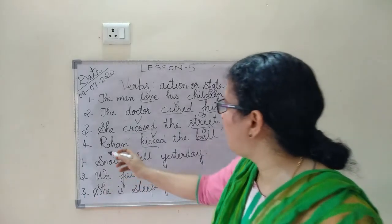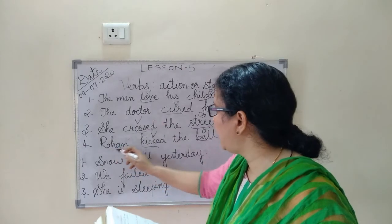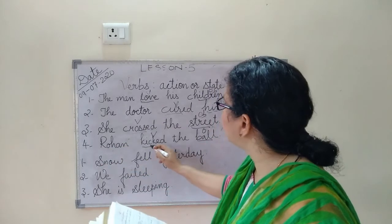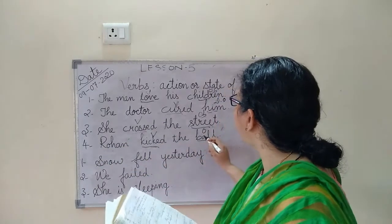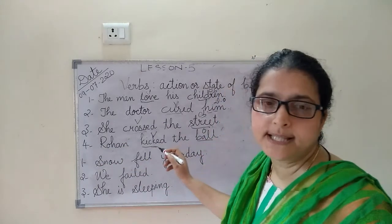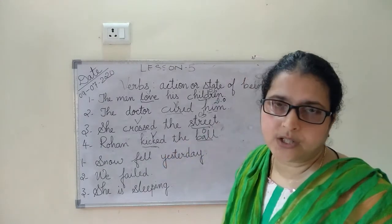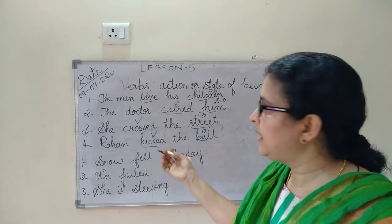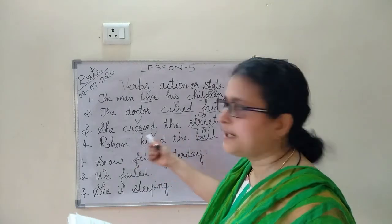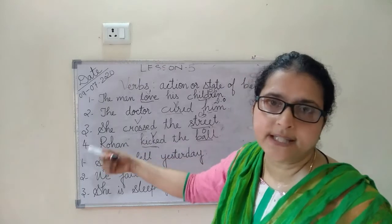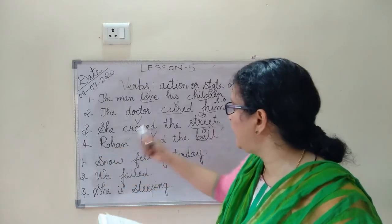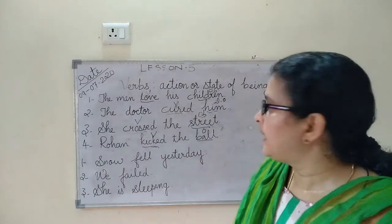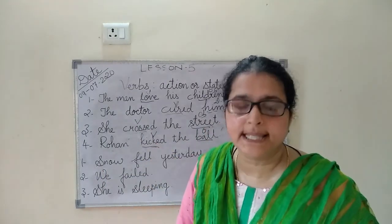Fourth example: Rohan kicked the ball. Rohan is the subject, kicked is the verb, and the ball is the object. The sentence is complete, so kicked is a transitive verb.